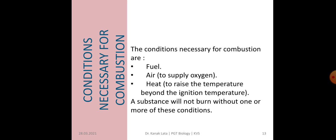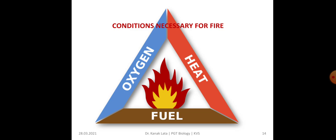Now let us see what are the conditions necessary for combustion. There are three conditions: first is fuel, that is a combustible substance; second is air, because it supplies oxygen; and third is heat, to raise the temperature beyond the substance's ignition temperature, since below the ignition temperature a substance will not catch fire. A substance will not burn without one or more of these conditions. Here you can see diagrammatically that oxygen, heat, and fuel — all three are necessary conditions for combustion.